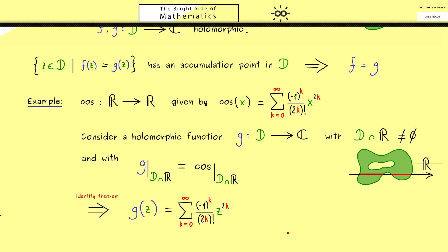So the conclusion here is if you want to extend the cosine function from the real number line to a holomorphic function in the complex realm, we have to use the same power series.